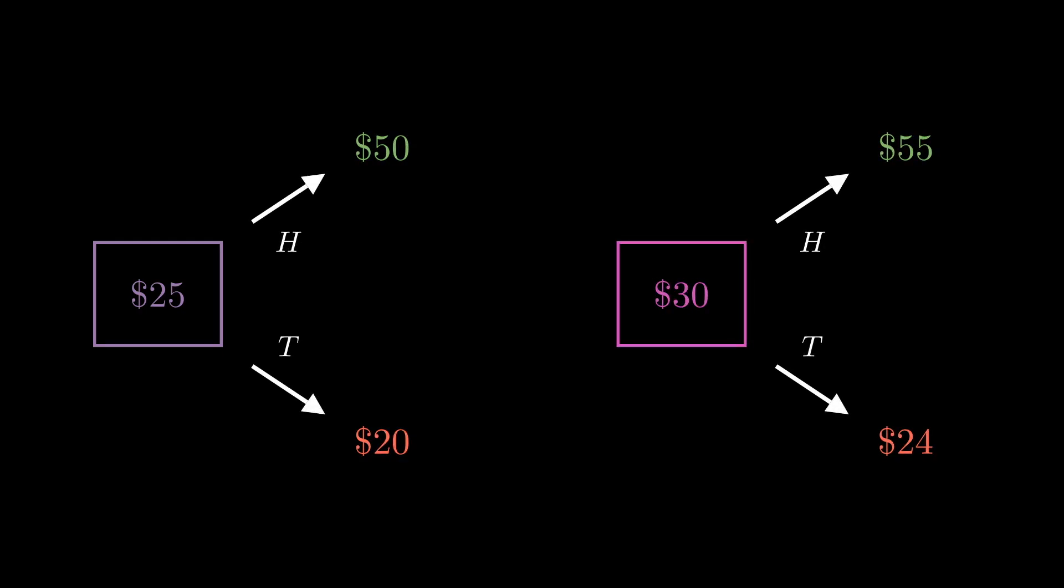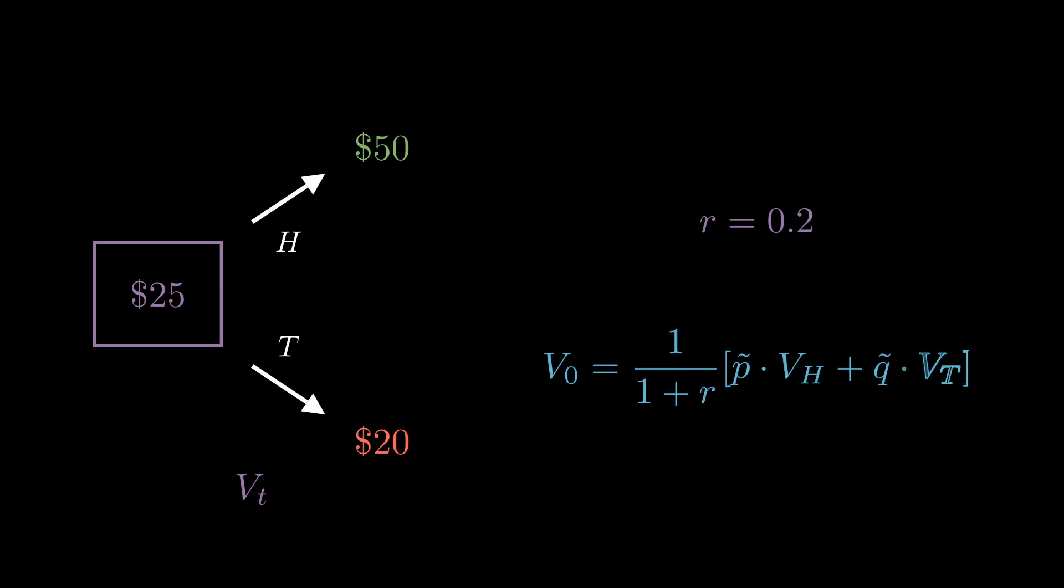So let's see risk-neutral probabilities in practice. Let's bring back our two assets, except for the second asset, we're going to say that we don't know the price. In fact, we want to find a price for the second asset such that there is no arbitrage. Furthermore, let's assume that the interest rate is 0.2.